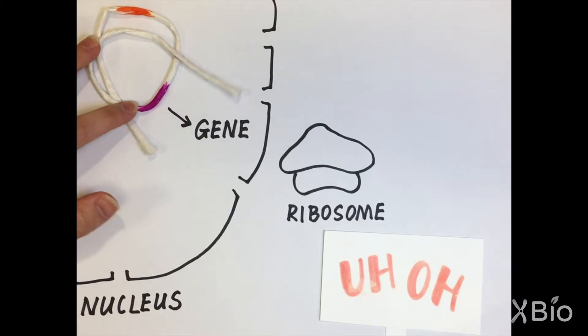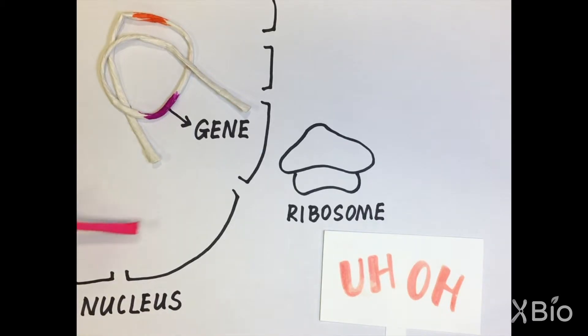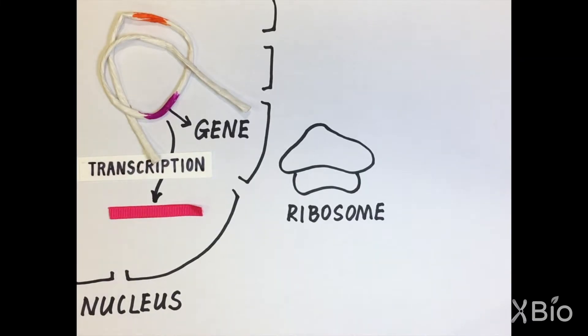Since the DNA can't leave the nucleus, the cell makes a copy of just the instructions for one protein. The copying process is called transcription, and a molecule similar to DNA called RNA is used to make the copy.